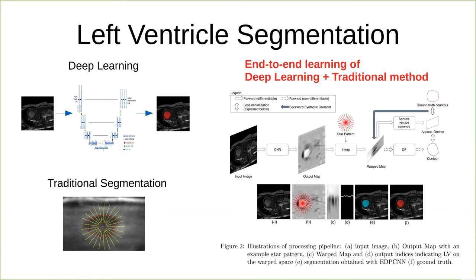Therefore, they need to combine CNN with a classical segmentation algorithm so that the latter can directly incorporate adequate prior knowledge to deal with this problem. In this work, we introduce combining CNN with the active contour algorithm into a single end-to-end trainable supervised pipeline called EDB-CNN for the segmentation task.